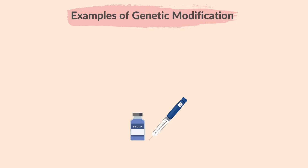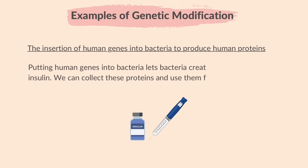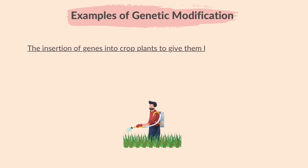Here are a few situations where genetic modification might be applied. The insertion of human genes into bacteria to produce human proteins — putting human genes into bacteria lets bacteria create human proteins like insulin. We can collect these proteins and use them for medical needs. The insertion of genes into crop plants to give them herbicide resistance.